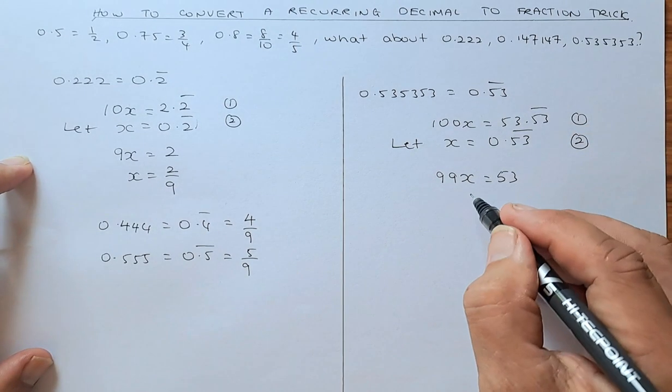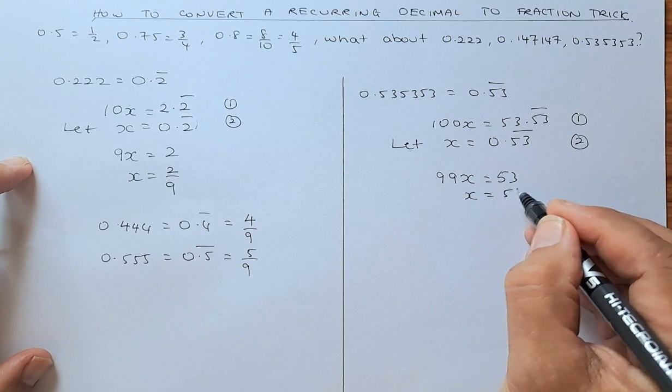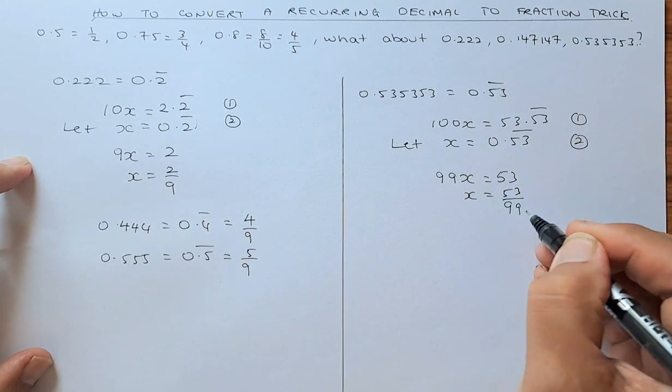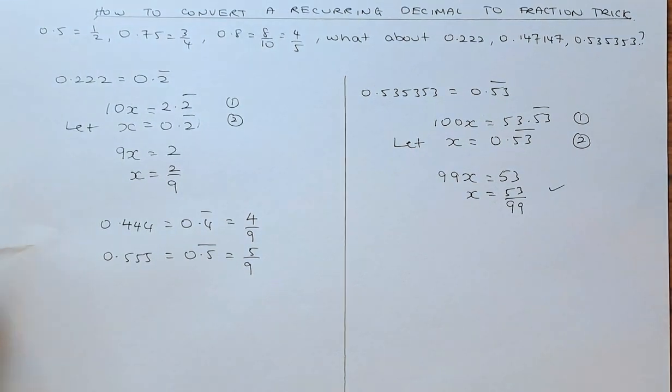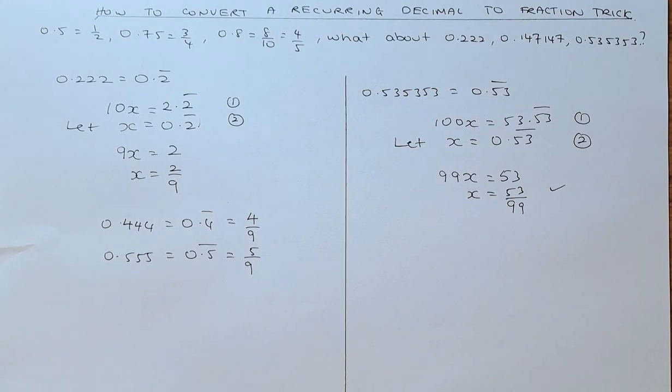So now to solve this, x will be equal to 53 over 99, and that is how you convert a recurring decimal into a fraction.